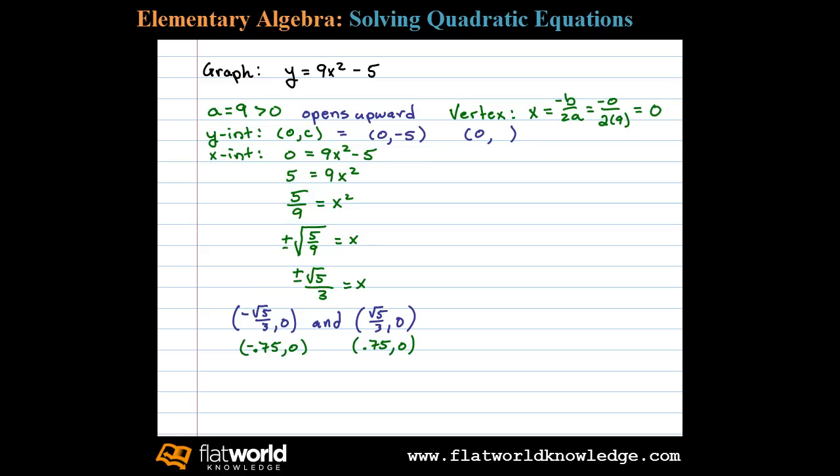To determine the corresponding y value we substitute x equals 0 into the original equation. We have 9 times 0 squared minus 5. 9 times 0 is just 0 leaving us with negative 5. So the vertex is 0 comma negative 5. Notice the vertex is the same as the y-intercept.